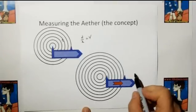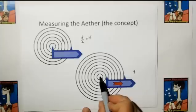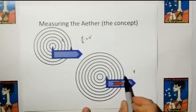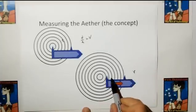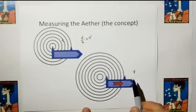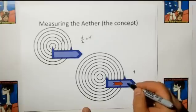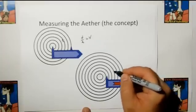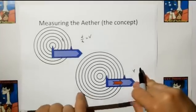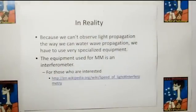If the boat is in motion, as you make some disturbance the leading detector is moving ahead of the wave, so it takes longer until the wave strikes the front detector. You can determine the boat's velocity using the Doppler effect relative to the water. But the problem is we use light to see water waves — how do you see light waves? Because we can't observe light propagation the way we can water waves, we have to use very specialized equipment.